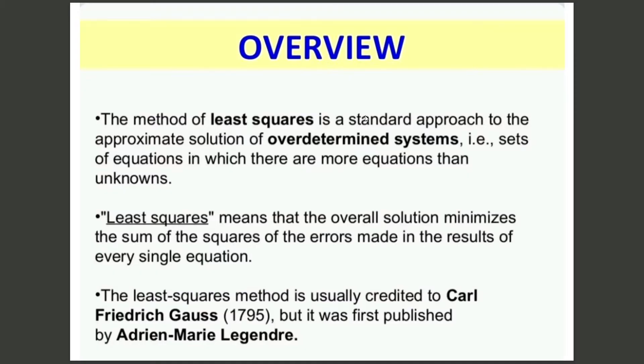Overview. The method of least squares is a standard approach to the approximate solution of overdetermined systems, i.e., sets of equations in which there are more equations than unknowns. Least squares means that the overall solution minimizes the sum of the squares of the errors made in the results of every single equation.